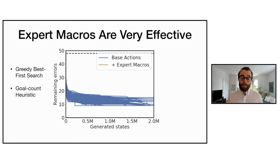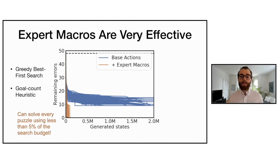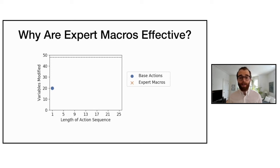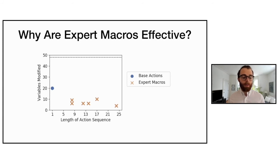Adding the expert macros onto the base actions allows us to solve every puzzle using less than five percent of the original search budget. Plotting the number of state variables modified versus the length of the action sequence, the base actions modify 20 stickers in one step, while the expert macros modify many fewer state variables. The hypothesis is that being more focused — modifying fewer state variables — is what leads to this planning efficiency gain.